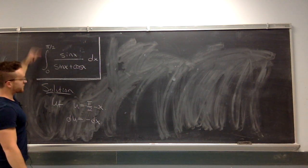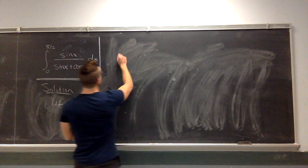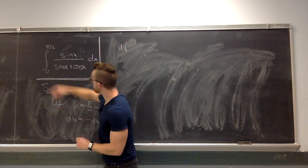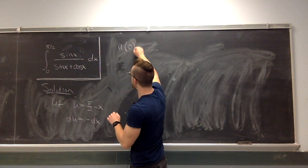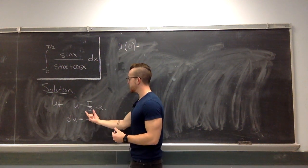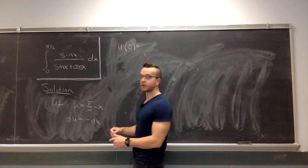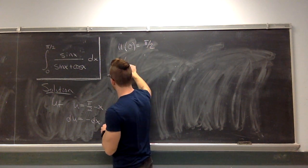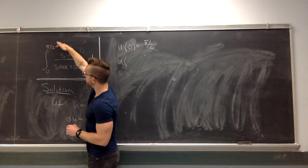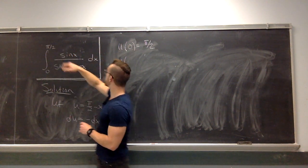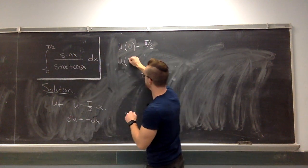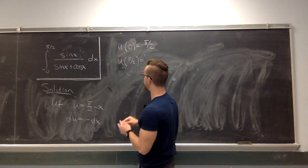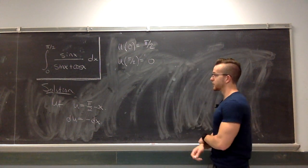And then we need to figure out how the bounds change. So when x is 0, what is u? Well, u is going to be π/2 minus 0, which is π/2. Likewise at the upper bound, when x is π/2, what is u? π/2 minus π/2 is 0. So, okay.